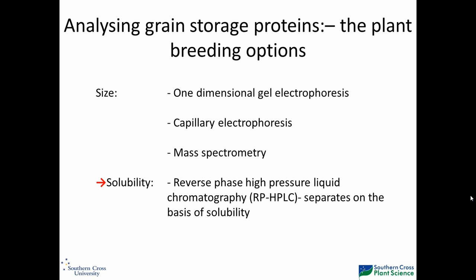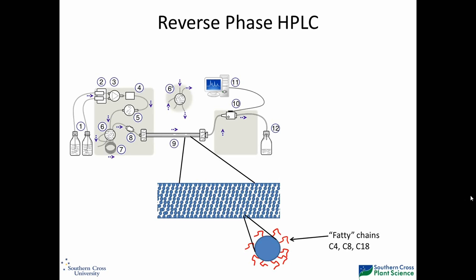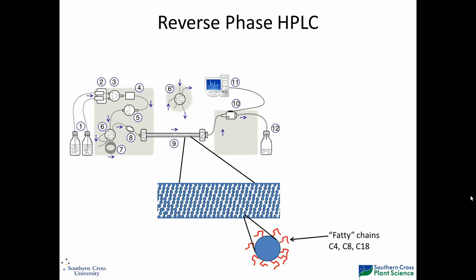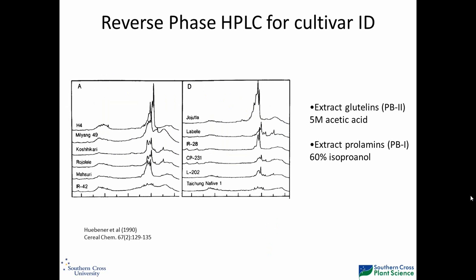Moving to the work we're doing on analysing storage proteins — there are a number of different ways of analysing these proteins, and we've chosen reverse phase HPLC because it's based on solubility differences. Solubility and mouthfeel are more likely to have a measurable impact on eating quality rather than size alone. Reverse phase HPLC separates on the basis of solubility — the extent to which the molecule adheres and is retarded in the column. You have fatty carbon chains off the end of the matrix, and analytes are retained depending on their level of solubility.